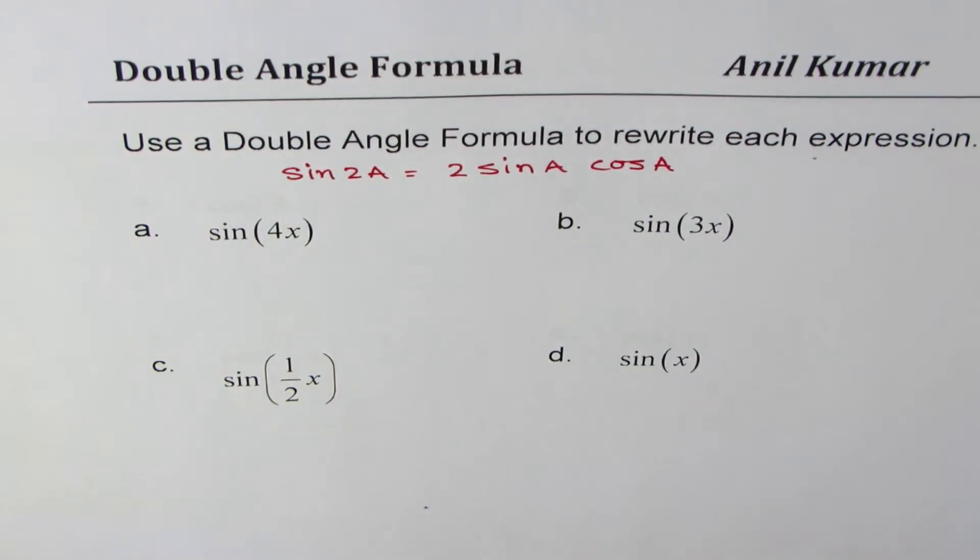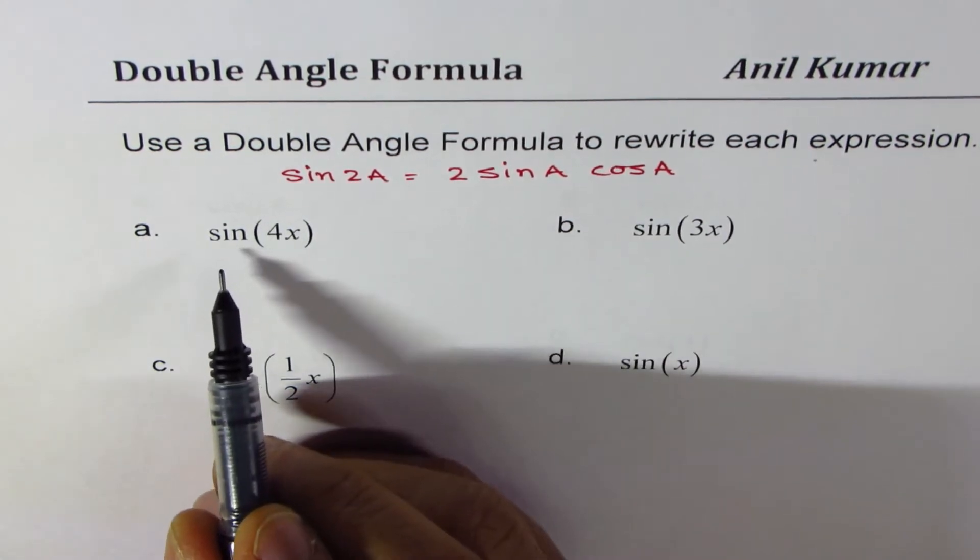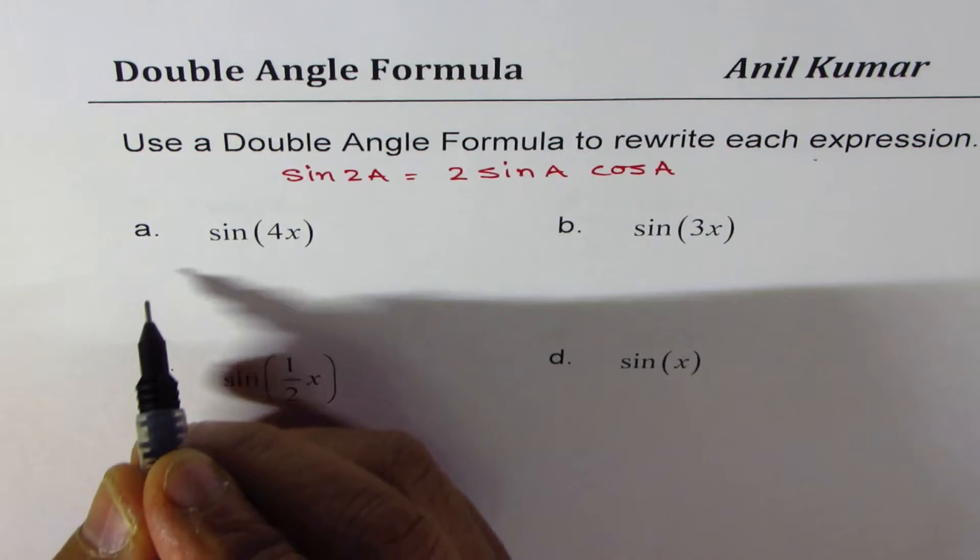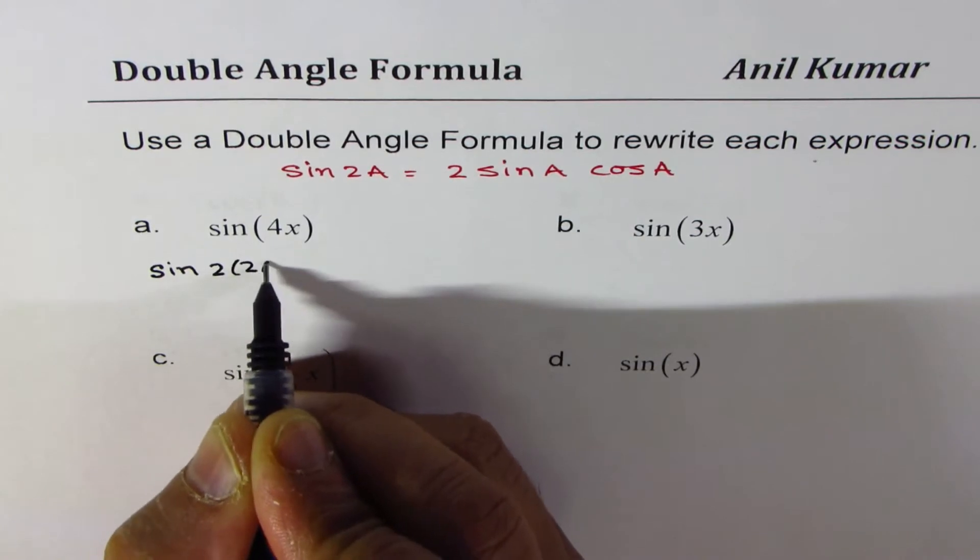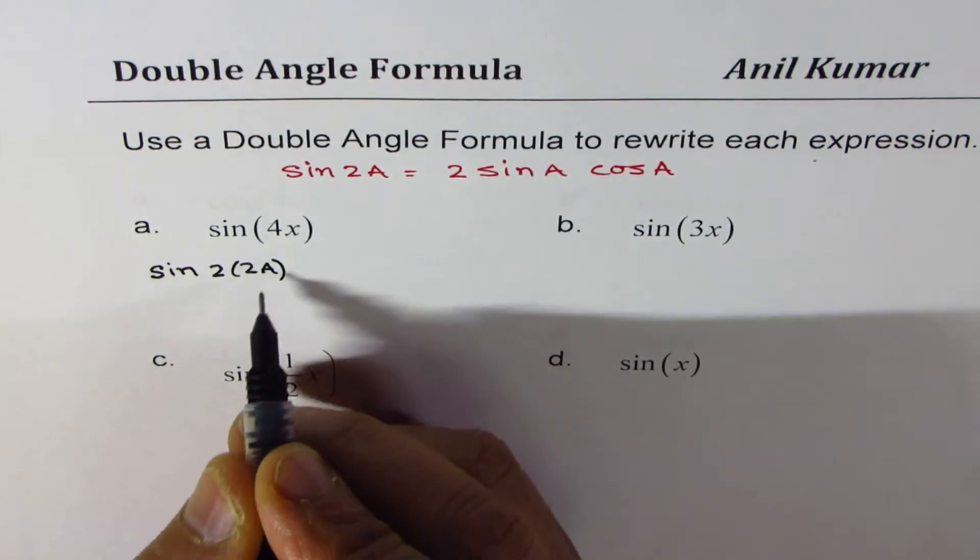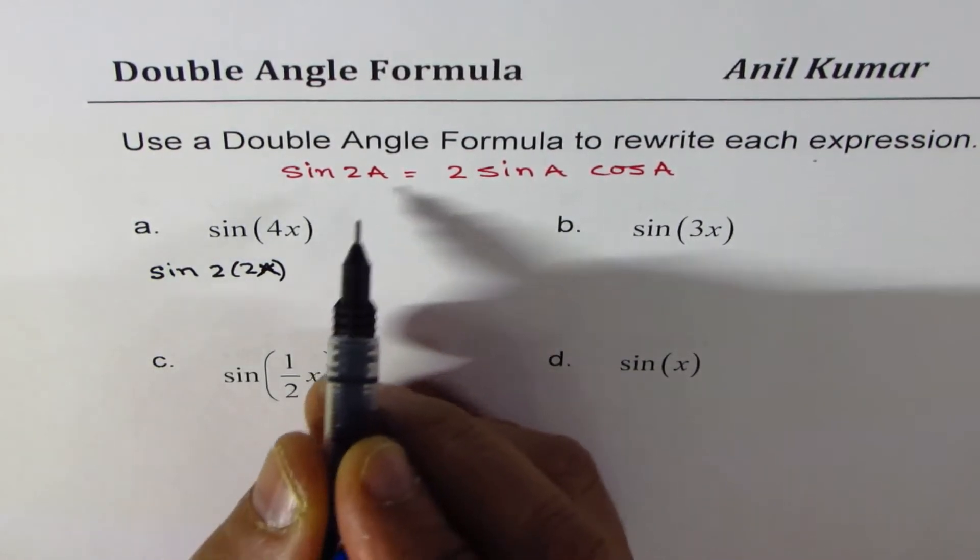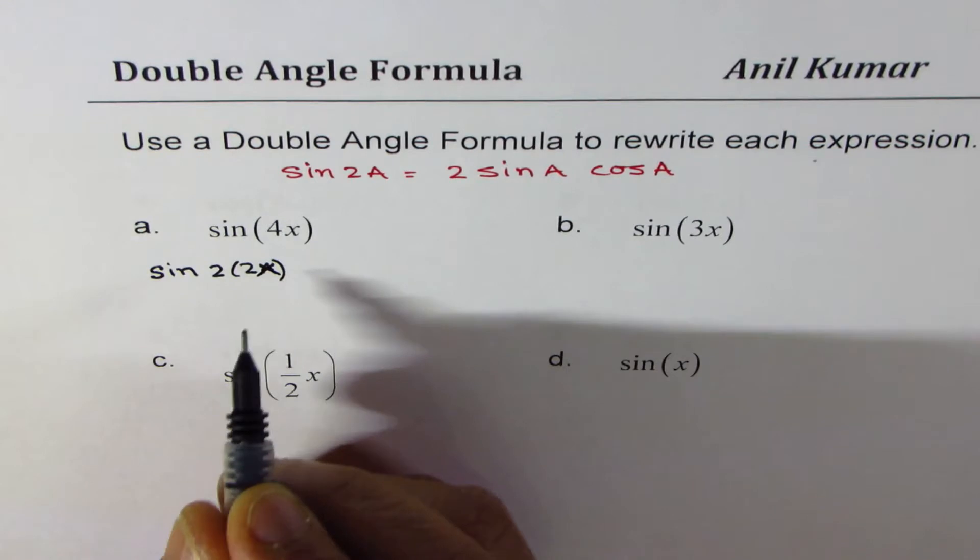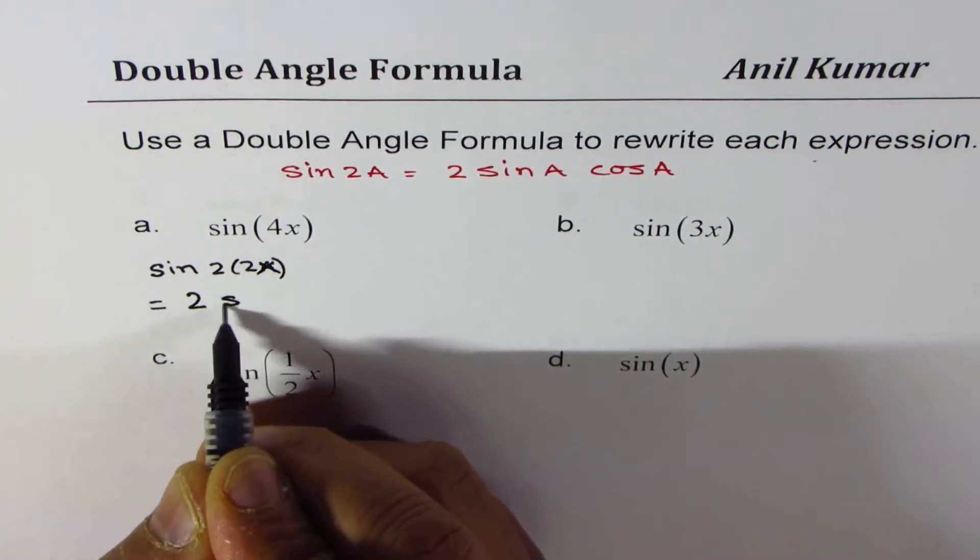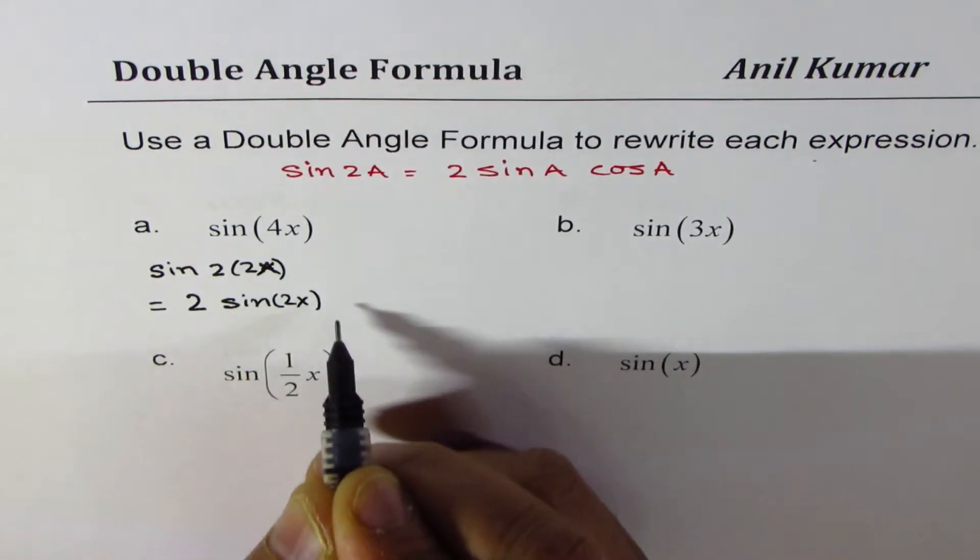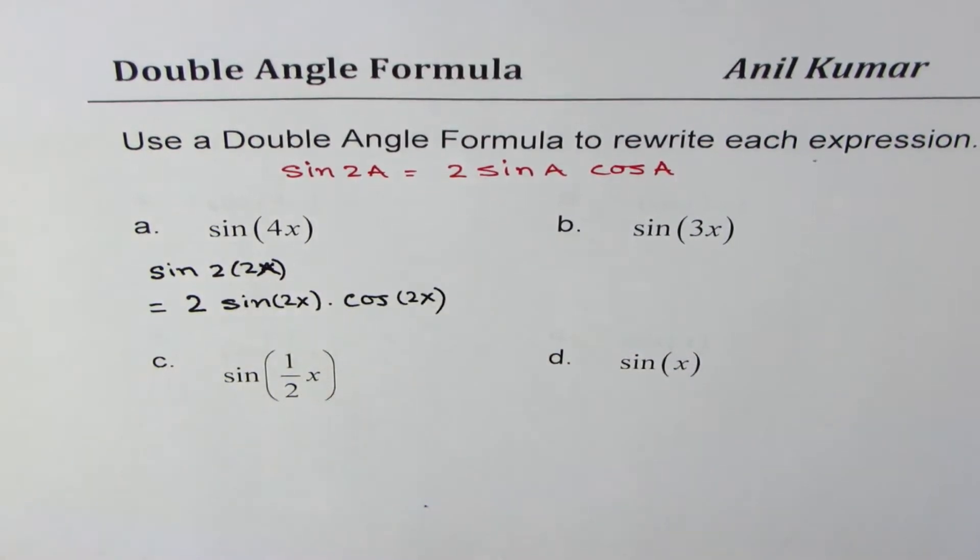You can always pause the video, answer the question, and then look into my suggestions. The first one here is sine of 4x. I could write sine of 4x as sine of 2 times 2x. So as you can see, a for us is 2x, and therefore, I could write this as 2 times sine of 2x times cos of 2x. So that is how you have to do this question.